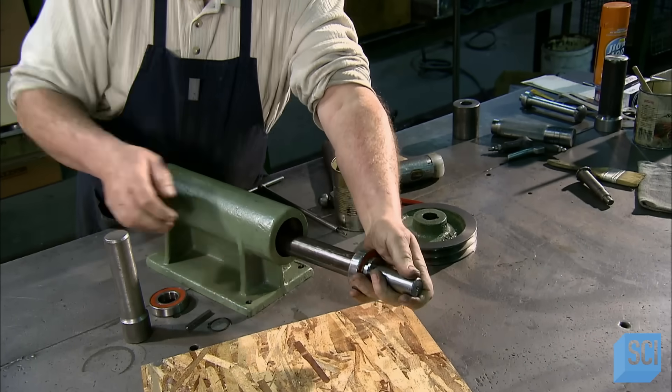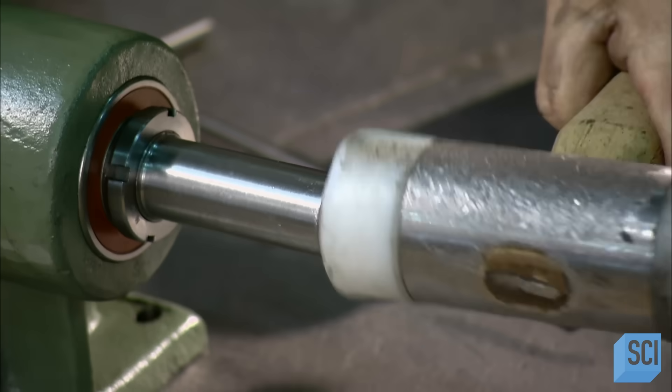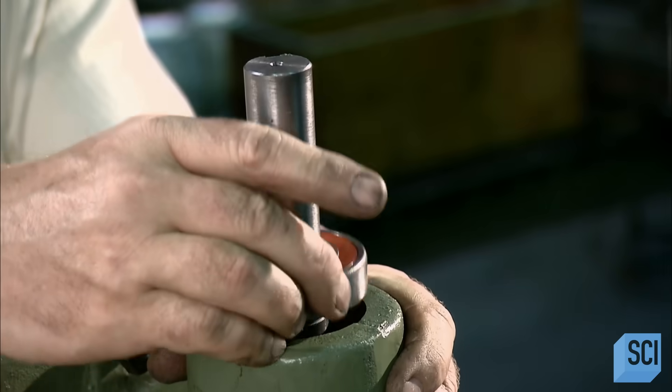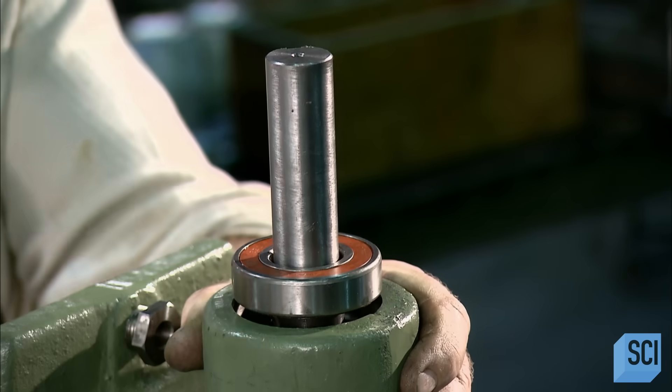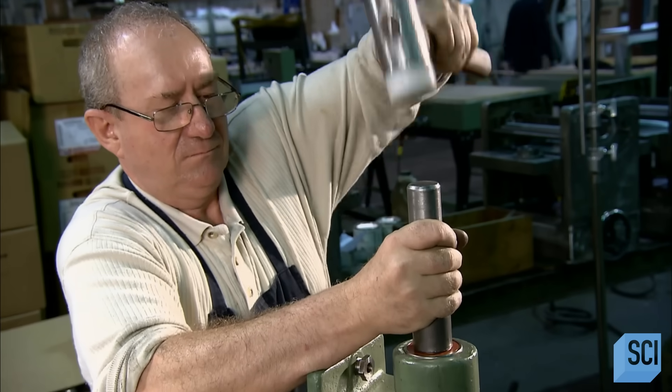One of the saw's key components is this lower bearing case. It links the motor to the lower of two cast iron wheels which turn the saw blade.